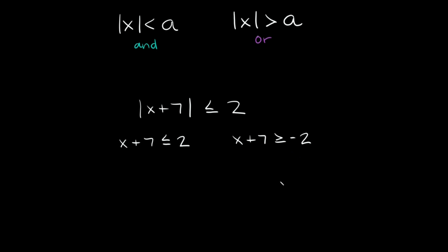Remember this original problem had a less than or equal to symbol, so that means we have to use the word 'and'. So you write 'and' between your two inequalities: x plus 7 is less than or equal to 2, and x plus 7 is greater than or equal to negative 2. Now let's solve these individually to isolate our variable x.